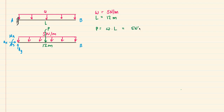P equals w times L, which is 5 newtons per meter times 12 meters, giving us 60 newtons acting downward. We'll use this resolved force to find our reactions Ay, Ax, and Ma.